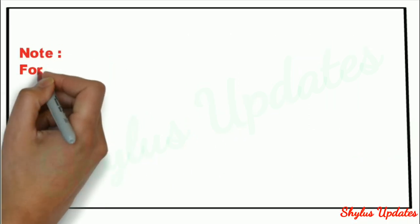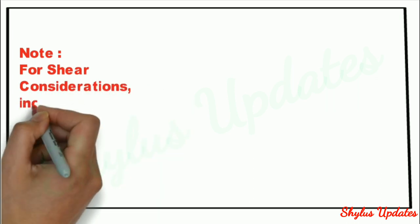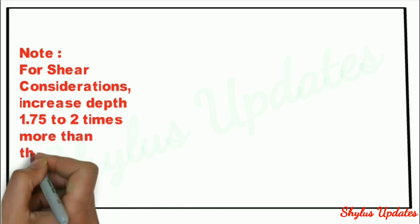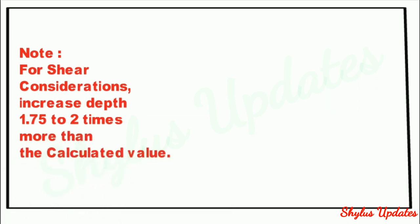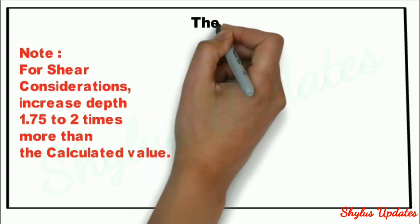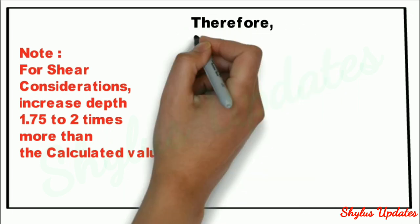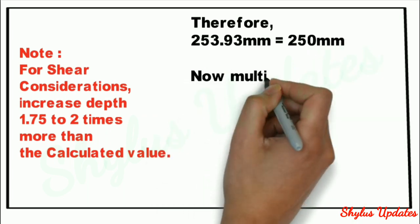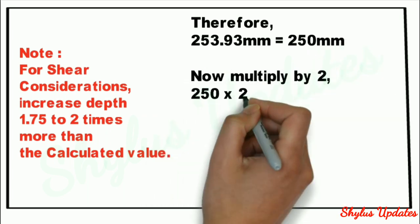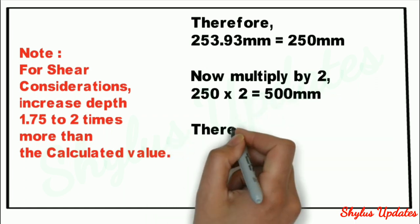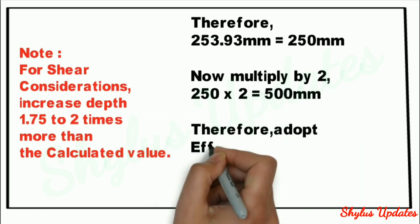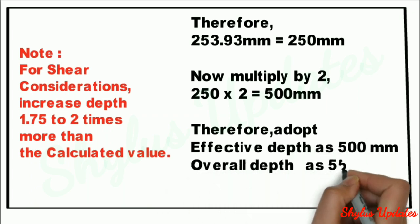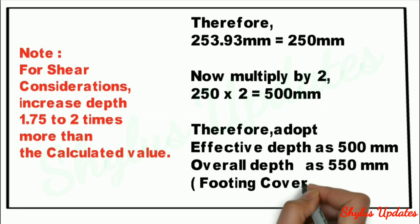Note: for shear considerations, increase the depth 1.75 to 2 times more than the calculated value. Therefore 253.93 mm is approximately 215 mm — multiplying by 2 gives 500 mm. Therefore, adopt effective depth as 500 mm and overall depth as 550 mm, because for footing the cover is 50 mm.